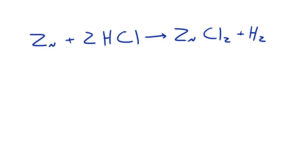If we go ahead and balance this because it's a little bit different, we have one zinc on the left-hand side and we have two hydrogens and we have two chlorines. Now of course we want to make sure we started with the same amount of stuff that we ended up with.